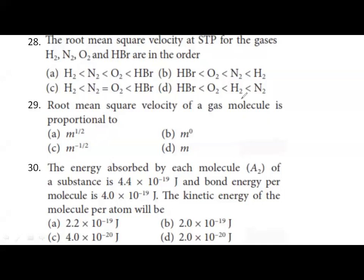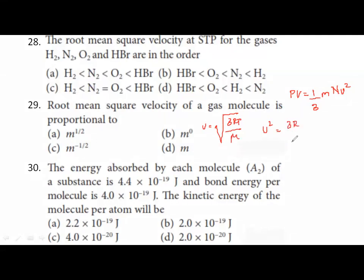Next question: root mean square velocity of a gas molecule is proportional to what? We know PV = (1/3)MNv², so v² = 3RT/M, and v = √(3RT/M). Therefore V_rms is inversely proportional to √M. The correct option is inversely proportional to √M.